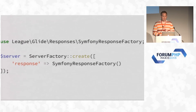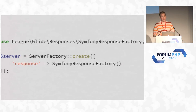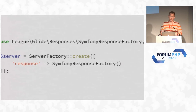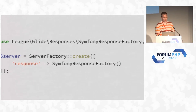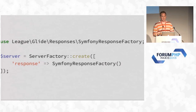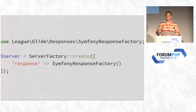Here's a quick example of how you configure Glide to use the HTTP Foundation response. I call it the Symfony response factory. When you create it, you pass through this factory in the response parameter — so it would be new SymfonyResponseFactory. That's all it takes; it's one line of code but it's an important one. Then you do the same sort of thing for PSR-7 versions and whatever else.